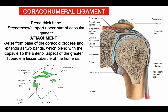The coracohumeral ligament is a strong thick band-like structure which provides support to the upper part of the capsular ligament and to the shoulder joint. It arises from the base of the coracoid process and extends as two bands which blend with the capsule to attach to the anterior aspect of the greater tubercle and lesser tubercle of the humerus.